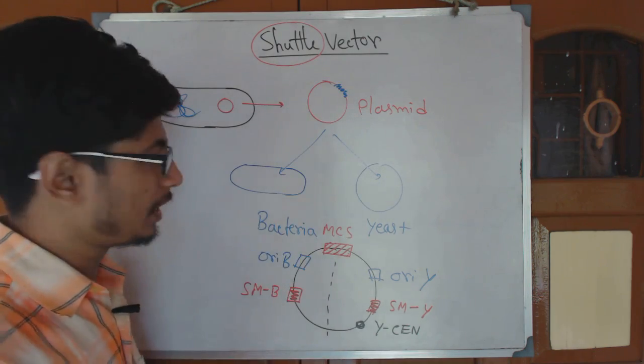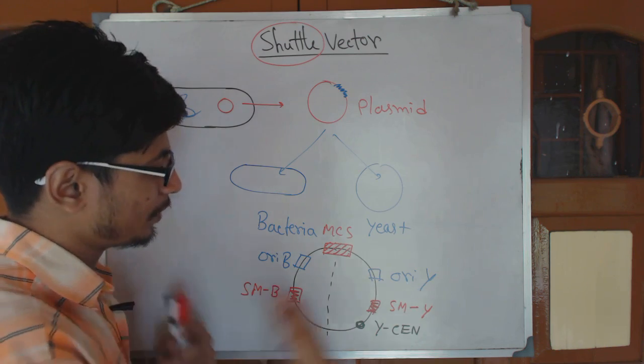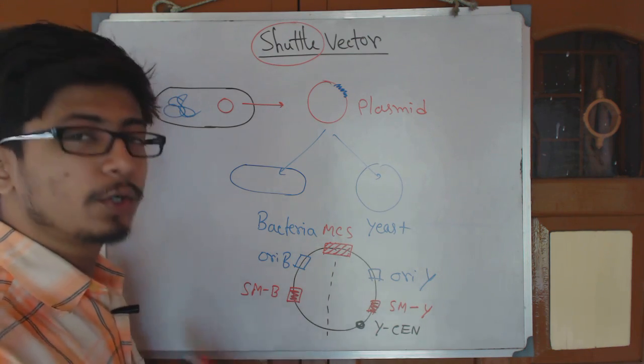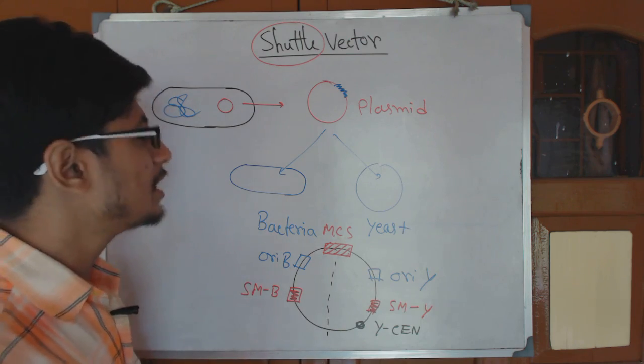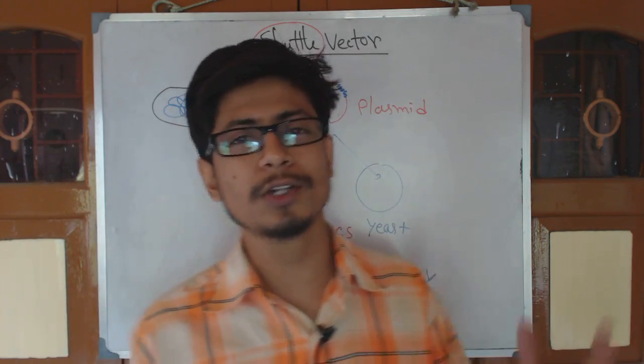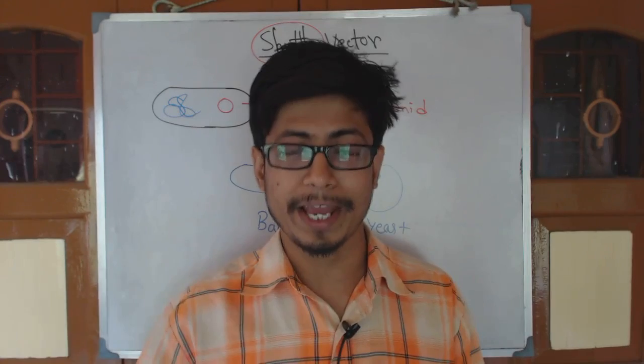So that is in a sense the shuttle vector and we can use it for expression purpose. We can use it for cloning purpose in both the hosts with only one vector. So if you have this you don't need to worry. You can easily do this for bacteria. We can also do this for yeast.